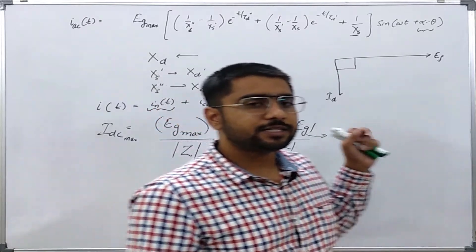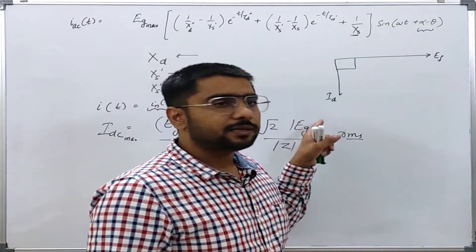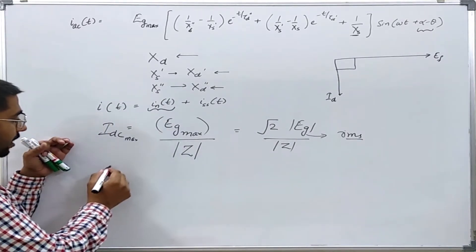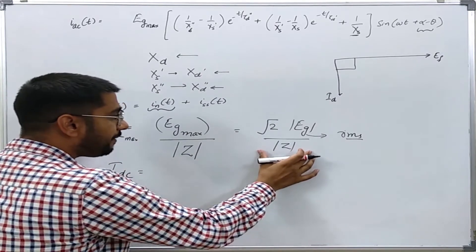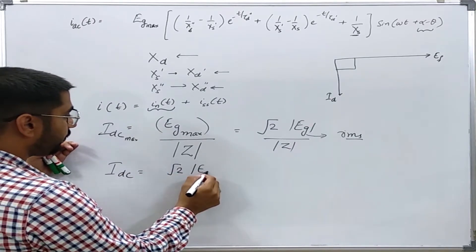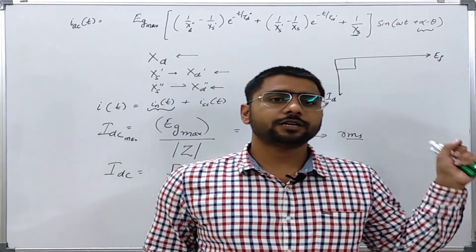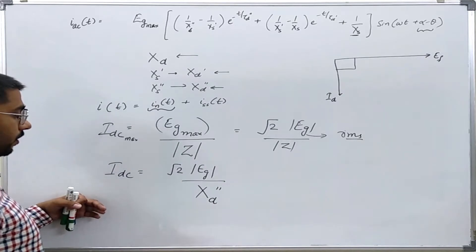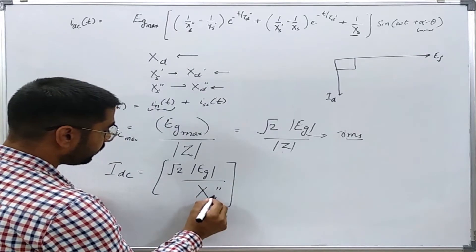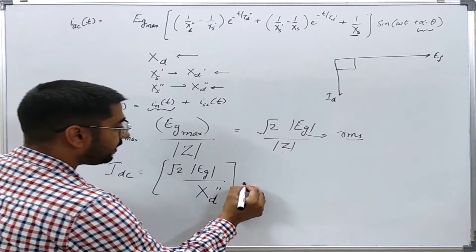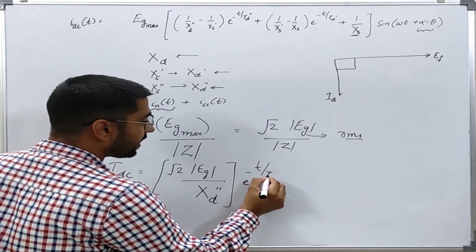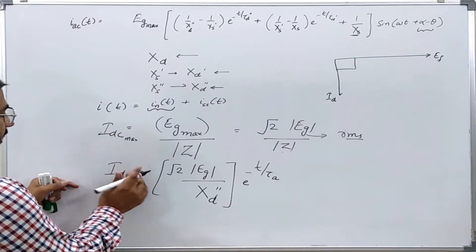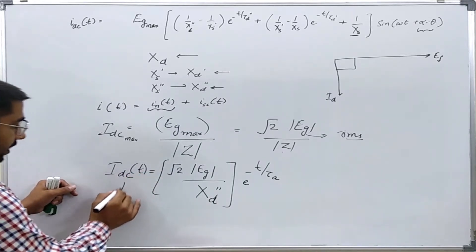This DC current can have a maximum value equal to root 2 times IAC. At time t equal to 0, the impedance given by the generator is actually the sub-transient reactance. So Z will be replaced by the sub-transient reactance, and this current will decay with time with the time constant of the armature winding, because it is flowing in the armature winding. This is the expression for the DC current — the asymmetrical part.